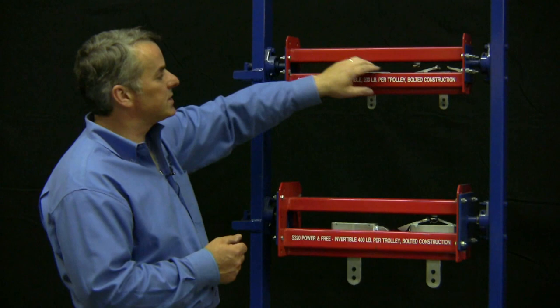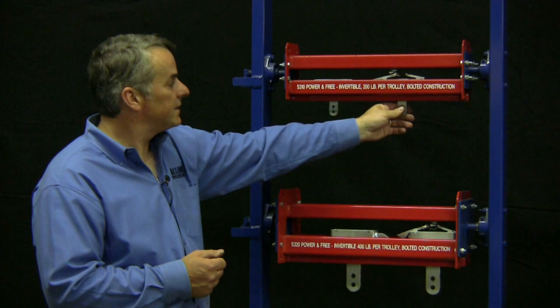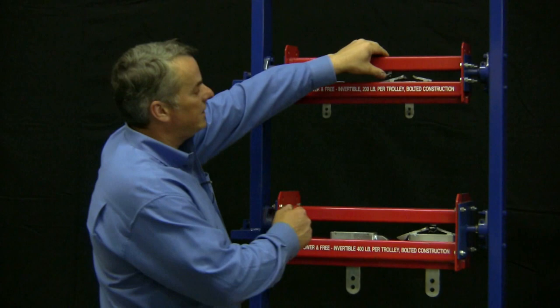The only thing that's hanging down from it is a drive dog. Underneath it is another set of tracks called the free tracks. Inside the free tracks are trolleys. These are free to roll back and forth, and only when engaged with this drive dog will they be pushed along.